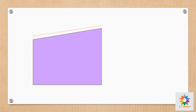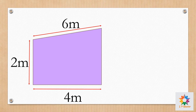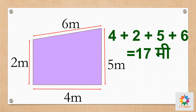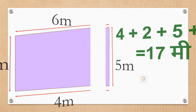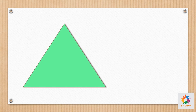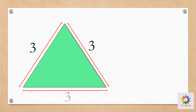आता ही आकृती पहा - ही आकृती चौकोन आहे, कारण 4 बाजू आणि 4 कोन आहेत. परंतु कोणते? ही आकृती - ती कोन छेडाई - इचे सर्व बाजू हे सारख्या आहेत, म्हणजे ही समभुज आकृती आहे.